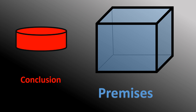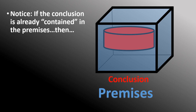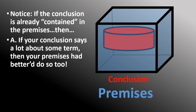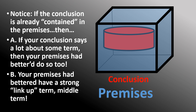As we said before, when you're doing a deduction, the conclusion is already to be contained somehow within your premises. So if your conclusion says a lot about some term — that is, distributes it in the conclusion — your premises are better to say a whole lot about that term as well. A second thing to remember is that you'd better have a strong middle term, a strong link-up term.